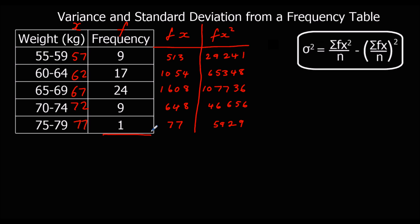So n is going to be the sum of the frequencies, which is 60. The sum of fx is the whole of the fx column added up, which is 3,900. And the sum of the fx squareds is the fx squared column added up, which is 254,910. So the variance is going to be 254,910 over 60, minus 3,900 over 60, all squared. Type it into the calculator.